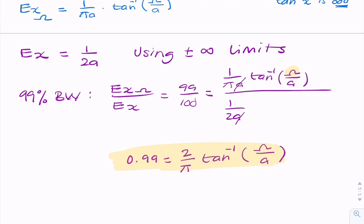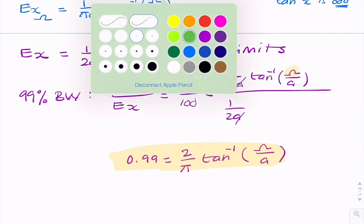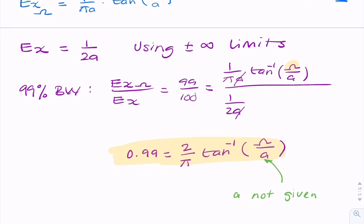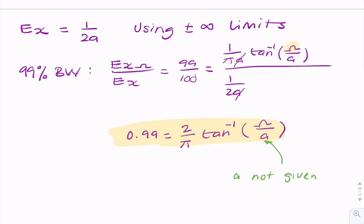Now, obviously, without a value for a, we can't do that, because in the question, a is not given. But if it were given, you could take the tangent of both sides and rearrange to solve for omega.